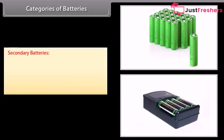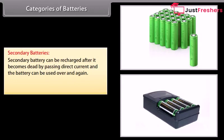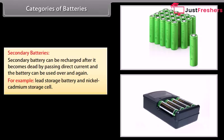Secondary batteries. Secondary battery can be recharged after it becomes dead by passing direct current and the battery can be used over and again. For example, lead storage battery and nickel cadmium storage cell.